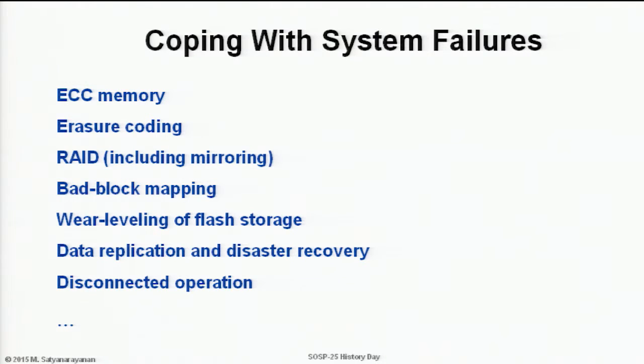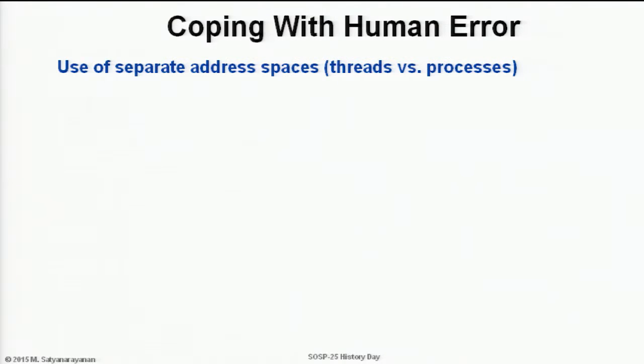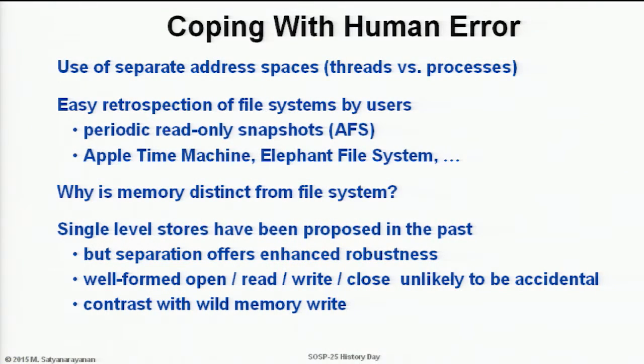Coping with system failures: here are some of the techniques we have looked at over time — the use of RAID, wear leveling for flash. All of these ideas have been driven by the motivation of robustness. On the human side, the ability to cope with human error motivated ideas such as the use of separate address spaces, and providing users a way to go back in time and look at files they may have accidentally deleted — motivating ideas such as Elephant and Apple Time Machine. Even the idea of a single-level store, which has resurfaced from time to time, has always fallen back because of concerns that a flat space could easily be hurt by programming error. Having a narrow interface separate from the flat interface of the memory system helps with robustness.